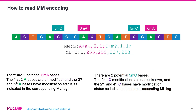Bringing it all together, how do we read the MM encoding? Below is a scaled-down example with 5mC and 6mA bases and their MM-ML encodings. First, we note that 6mA is detected with the A+A period annotation, followed by two encodings telling us there are two potential 6mA bases. The first encoding of value 2 means the first two adenosines are unmodified and the third has a 6mA modification detected with a corresponding ML probability of 255.